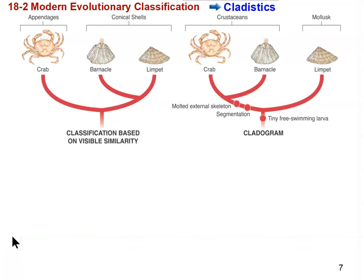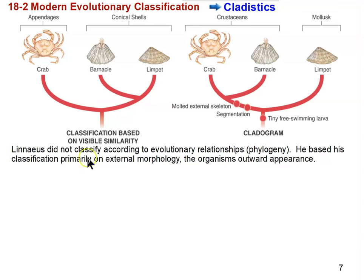Linnaeus is the father of taxonomy. He came up with a classification system and we revere him today because of that. He came up with kingdom, phylum, class, order, family, genus, species, and we still use that today but we've had to modify it and add to it. What he didn't do was classify according to evolutionary relationships — in other words, he didn't consider phylogeny. He based his classification mostly on external morphology, which means the outward appearance of organisms.